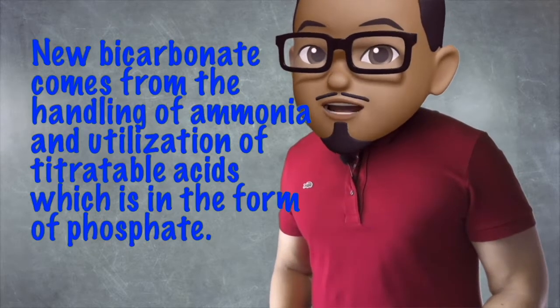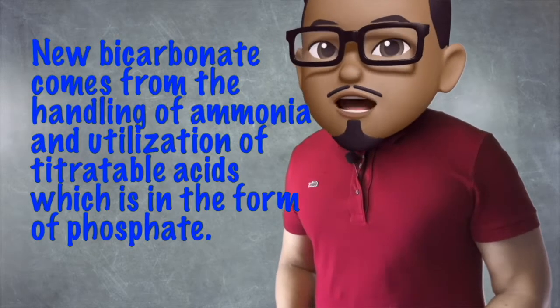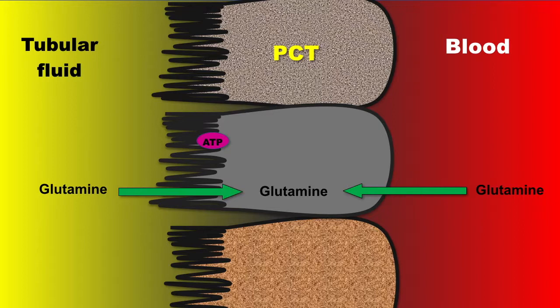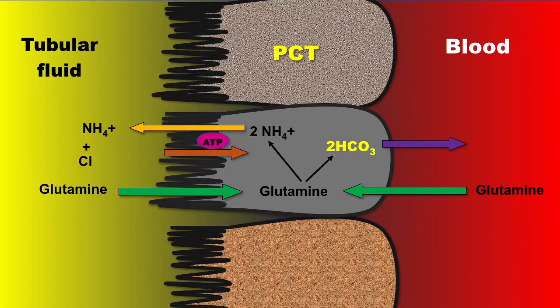New bicarbonate comes from the handling of ammonia and utilization of titratable acids, which is in the form of phosphate. Ammonium ion is synthesized from glutamine. Once inside the cell, glutamine dissociates to form two molecules of bicarbonate and two ammonium ions. Ammonium is secreted in the lumen in exchange with sodium, while bicarbonate is reabsorbed along with sodium in the basolateral side. This is new formed bicarbonate.